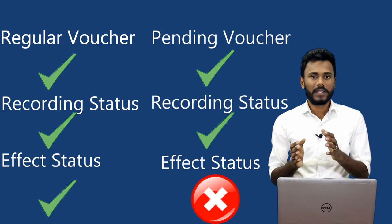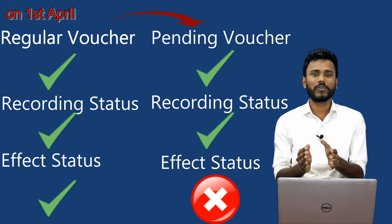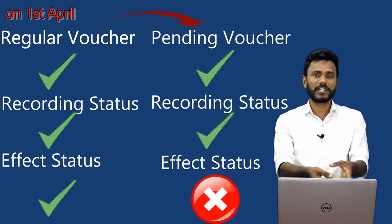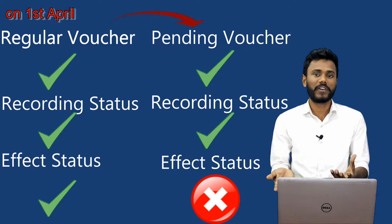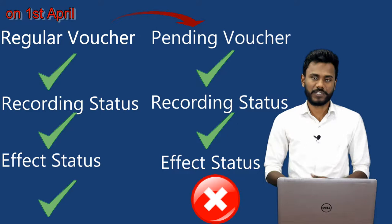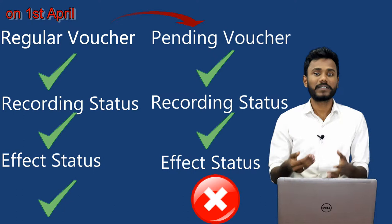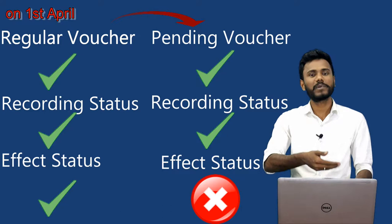If you are receiving a check on 1st April which is dated to 10th April, in Tally application you just record it on 1st April, but you need to convert the regular voucher into a pending voucher. If you do not convert the regular voucher into a pending voucher, automatically your bank balances will get increased. We need to record the transaction, but our book of accounts should not be affected with that check's value. You record it on a receipt voucher if receiving, or payment voucher if giving, but convert to pending.